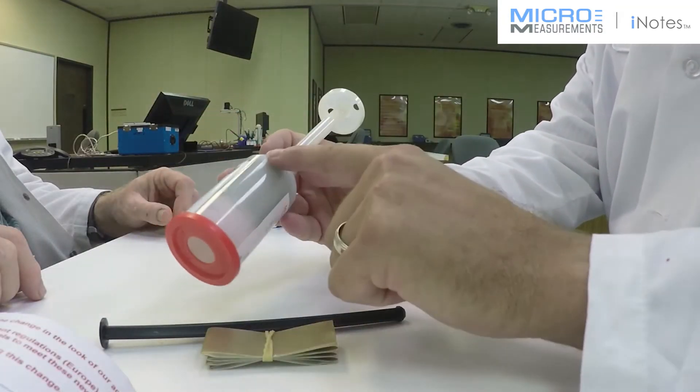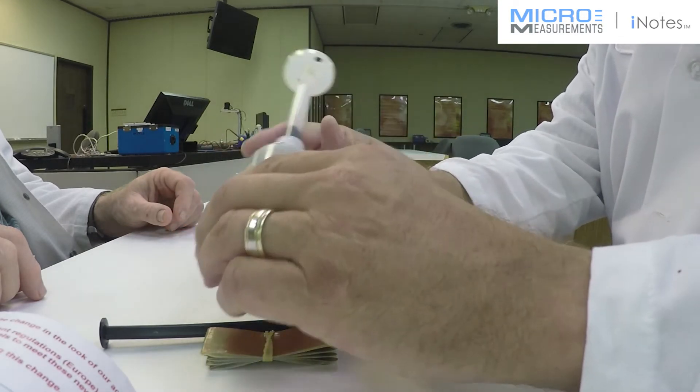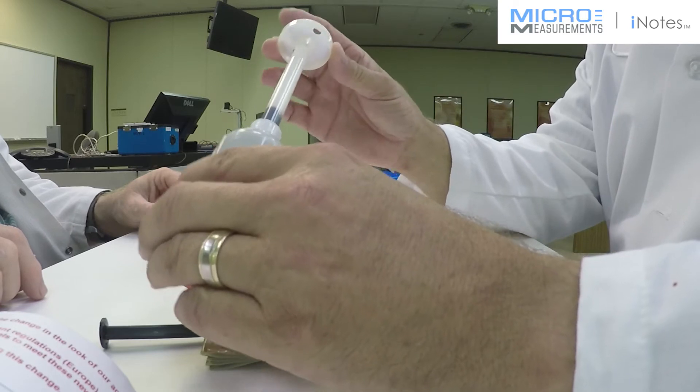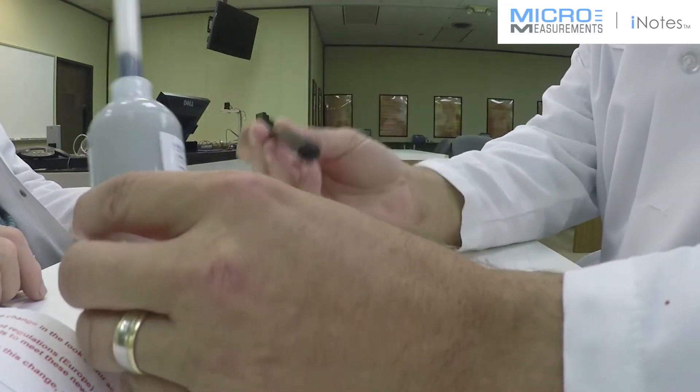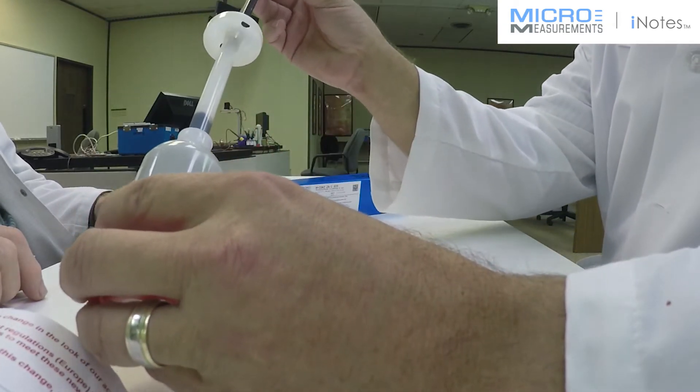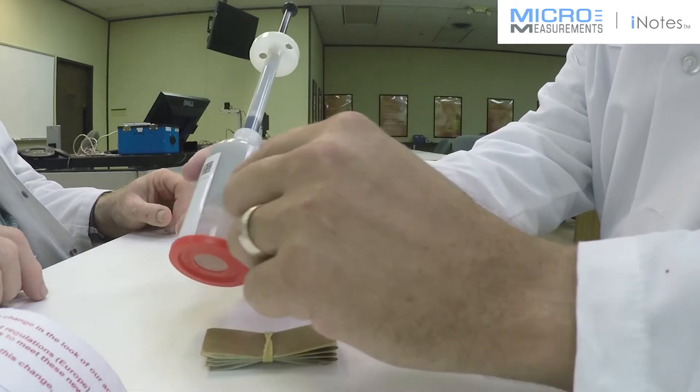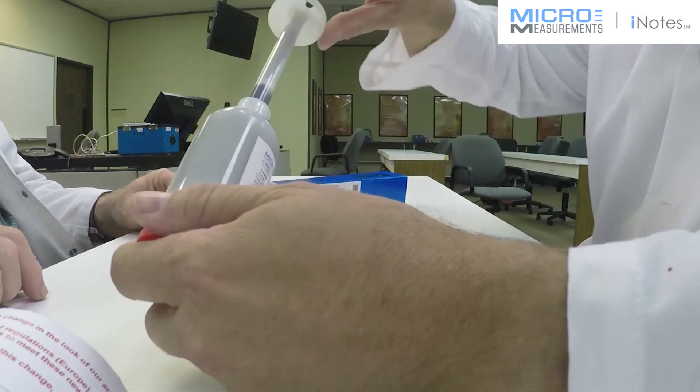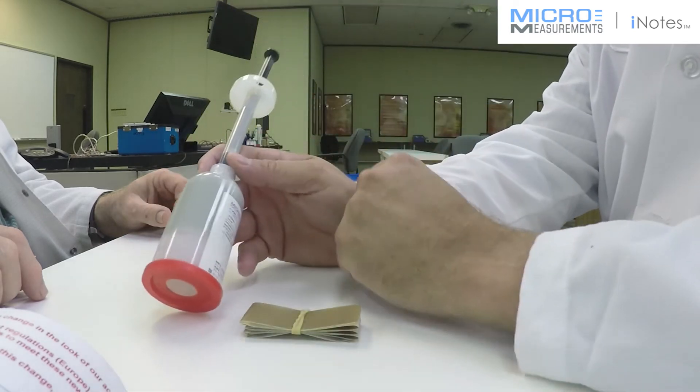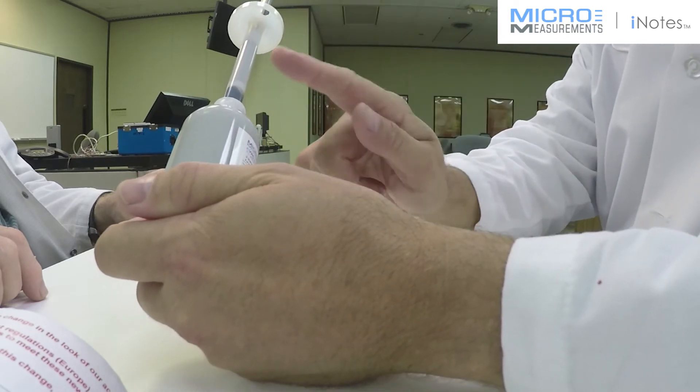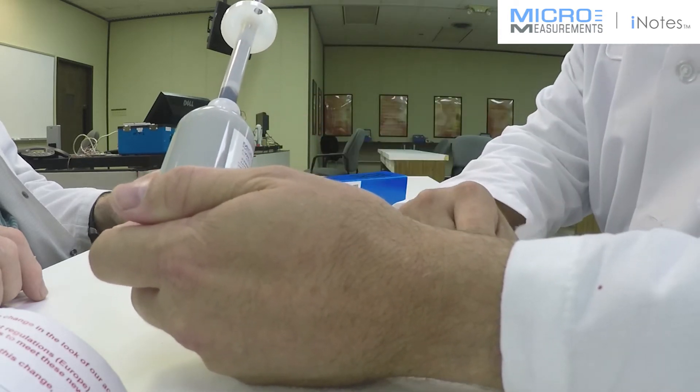You've got this plunger, which has the resin system down here in the bottom and the curing agent here in the neck of this nozzle. We take this little plastic rod and shove it down inside to force the curing agent into the resin system. Then we take this plunger and twist it about 50 times back and forth with that impeller to make sure we get the curing agent blended with the resin.